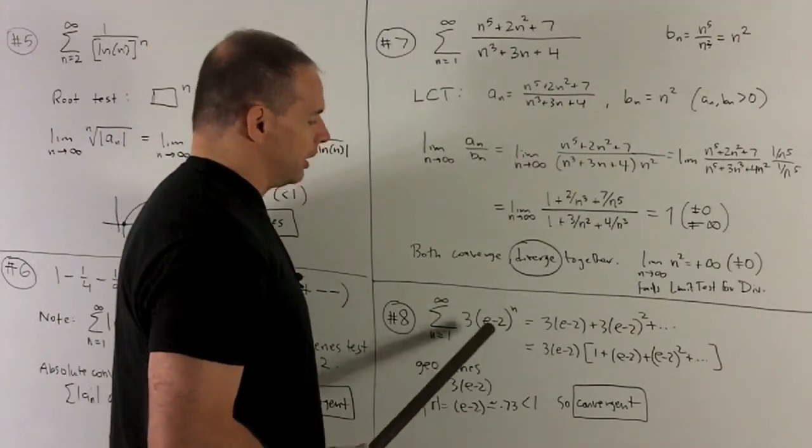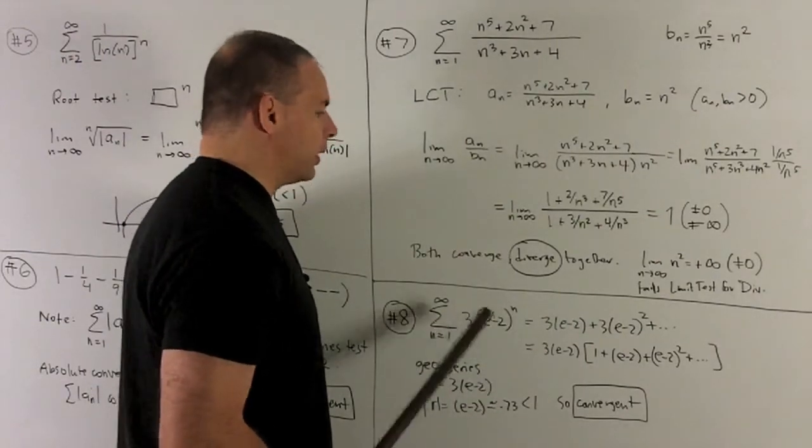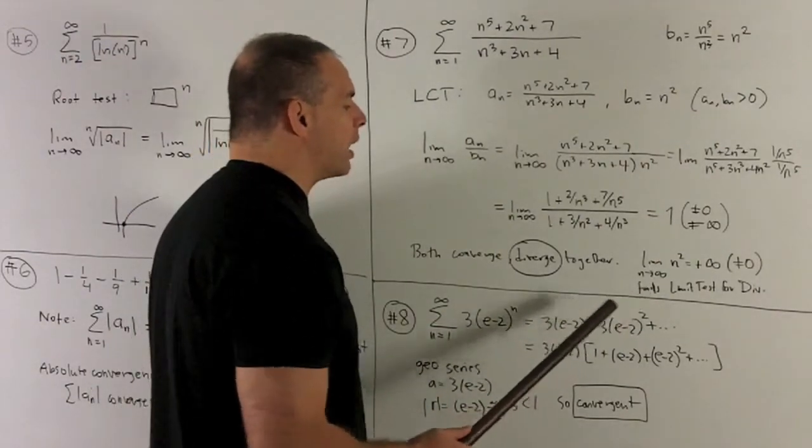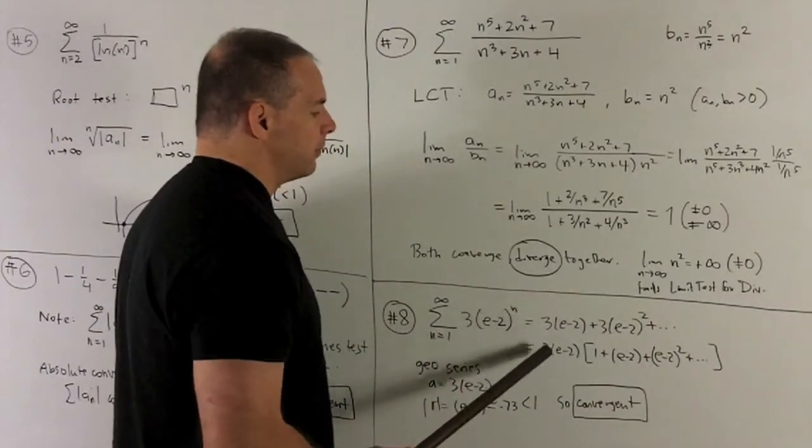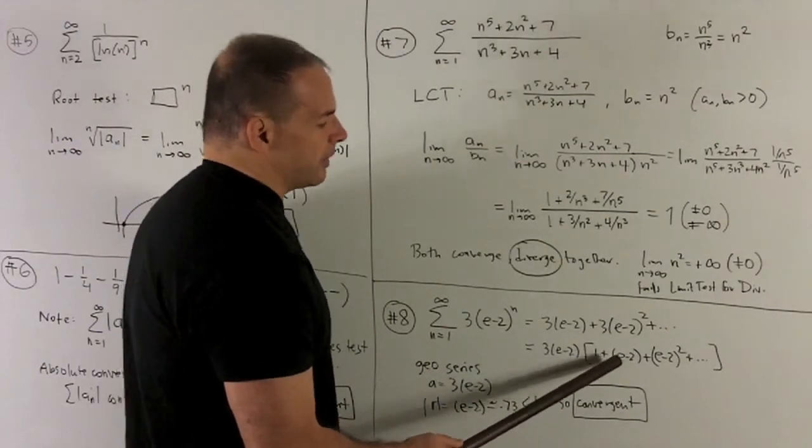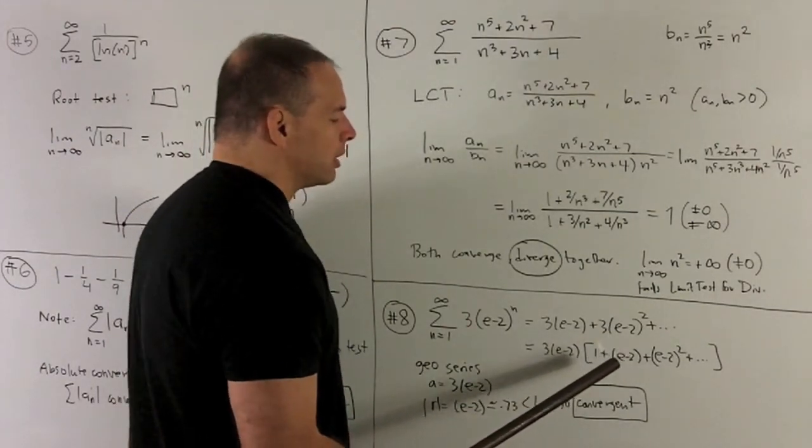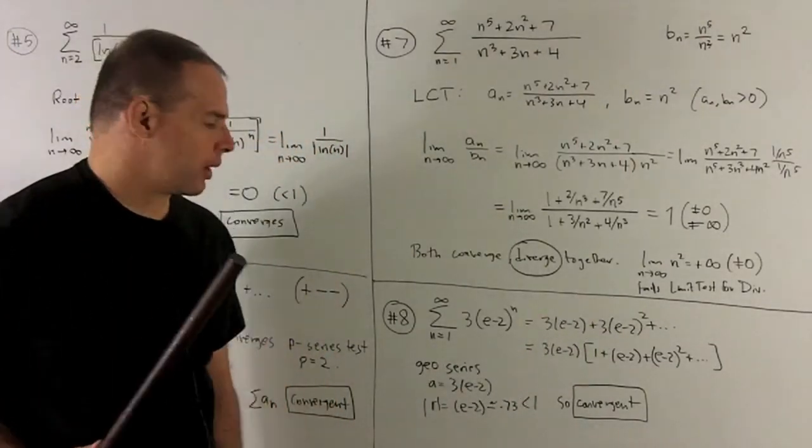Let's write out the first few terms. So I'll have, we're starting at 1, so it's going to just be 3 times e minus 2. I put a 2 in, I'm going to have 3 times e minus 2 squared, and so on. So what I'll do is I'll factor out this first term, 3 e minus 2, so that I get a 1 here. That's going to tell me that my r is going to be equal to e minus 2.